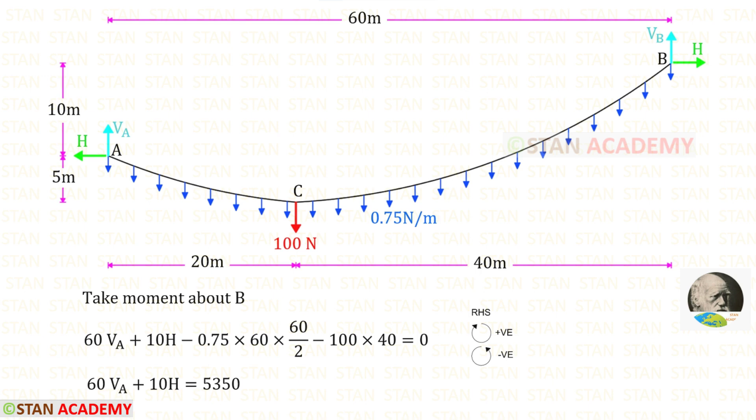The weight of the cable, the uniformly distributed load, is acting in the anti-clockwise direction so it will be negative. With the UDL we have to multiply the distance and the distance by 2. The point load 100 is acting in the anti-clockwise direction so it will be negative and the distance is 40.